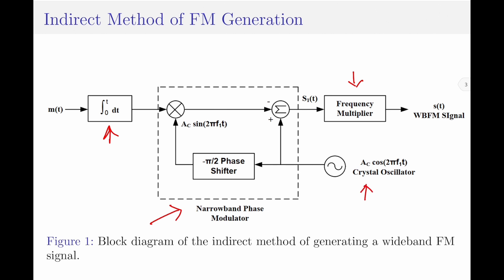The crystal oscillator produces a carrier signal equal to Ac·cos(2π·f1·t), where the carrier frequency is f1. Coming to the input of the system, we have the message signal — the baseband signal, also called the modulating signal. This message signal is first integrated and then fed to a phase modulator, so the output of the integrator is ∫₀ᵗ m(τ)dτ.